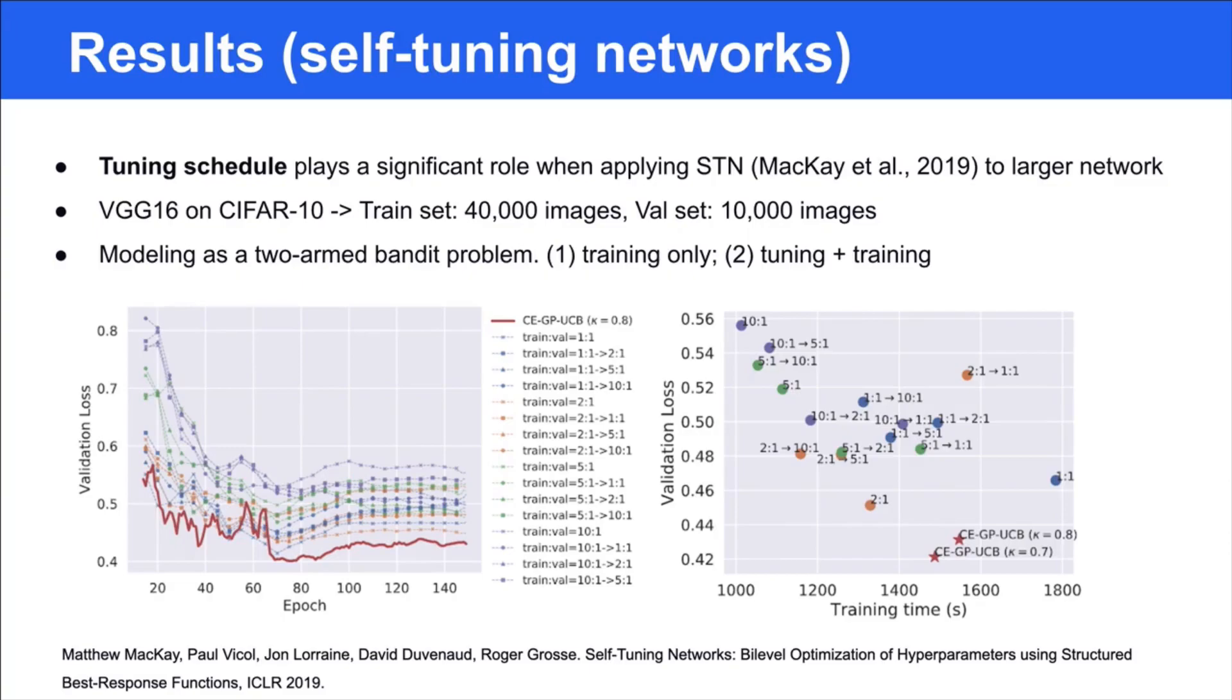To adjust the tuning schedule with the learning process, we model STN as a two-arm bandit problem, where the two arms are training only and tuning and training. Then the query costs the validation on the whole validation set. We apply our algorithm in this setting to decide whether or not STN should query the validation set and tune the hyperparameters. Compared to the baselines, we can achieve better performance with affordable searching time.